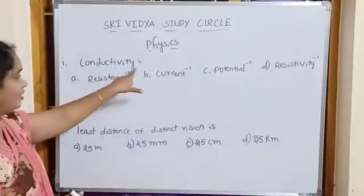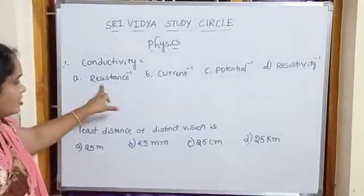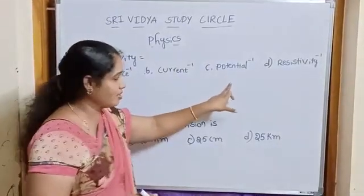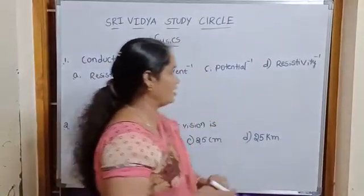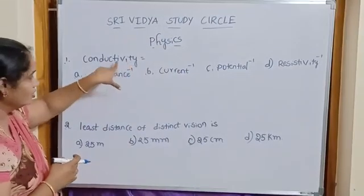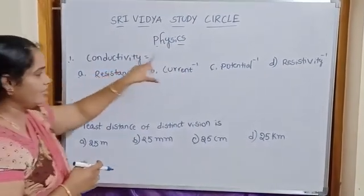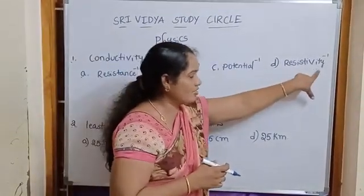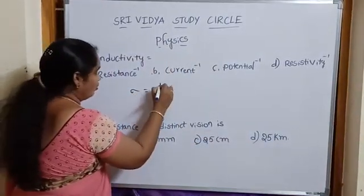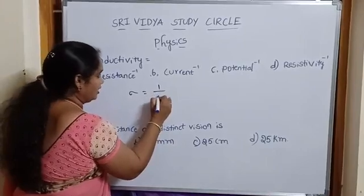First bit, conductivity. Here given resistance power minus 1, current power minus 1 and potential power minus 1, resistivity power minus 1. Here given conductivity. We observe this, then we have to choose resistivity. Then conductivity, generally sigma is equal to 1 by resistivity.